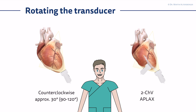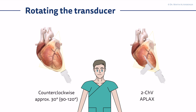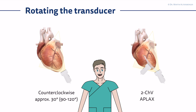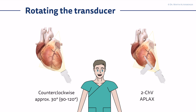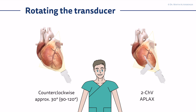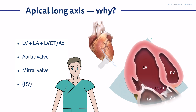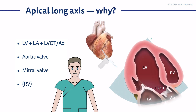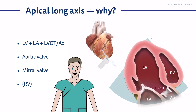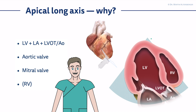Continuing from the two-chamber view with a counterclockwise rotation of approximately 30 degrees — overall from the four-chamber view, it's 90 to 120 degrees — you are then seeing the apical long axis view. In the apical long axis view, you can see the left ventricle, the left atrium, the LVOT, the aortic valve, parts of the ascending aorta, the mitral valve, and to a lesser degree also the right ventricle, which is allowed to be in the field of view.